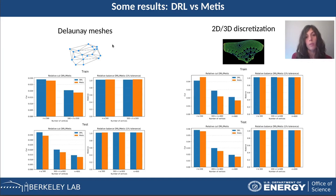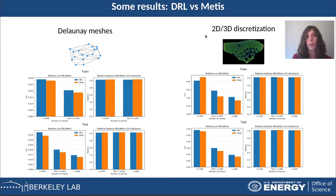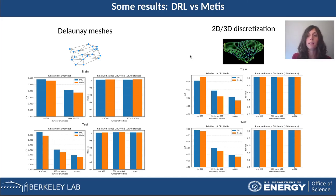The Delaunay meshes are certain triangulations on random points on the unit square, while the graphs in the 2D-3D discretization class are taken from the SuiteSparse Matrix Collection, which is a collection of sparse matrices coming from a wide range of real-world applications.